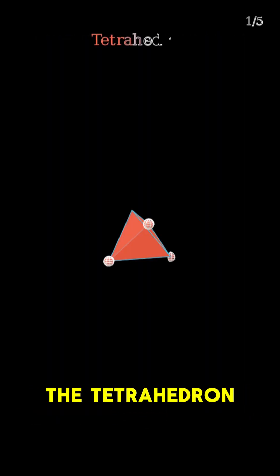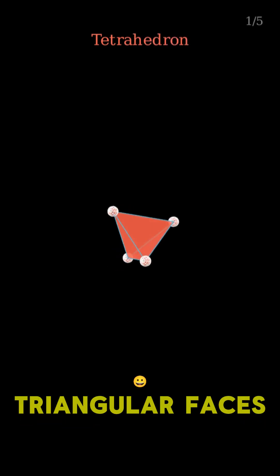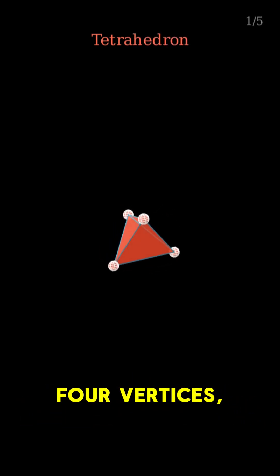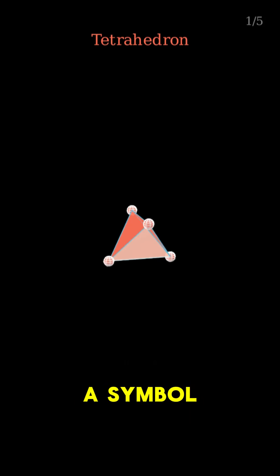First, the tetrahedron. Four equilateral triangular faces, four vertices, six edges, a symbol of fire, energy, and transformation.